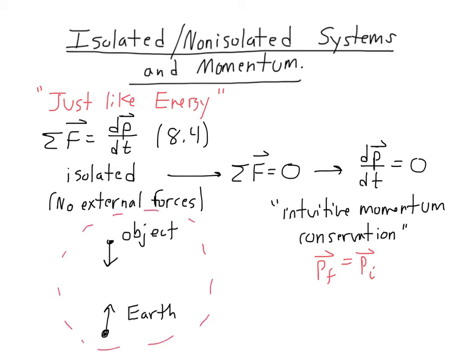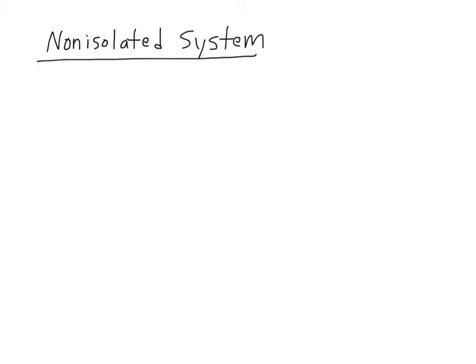I draw a dotted line to indicate where the system is and where the environment is. The net force is zero because I add the forces on the entire system, and the momentum is conserved in the entire system.